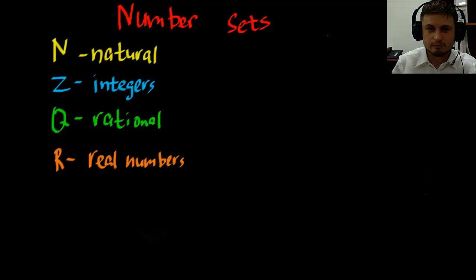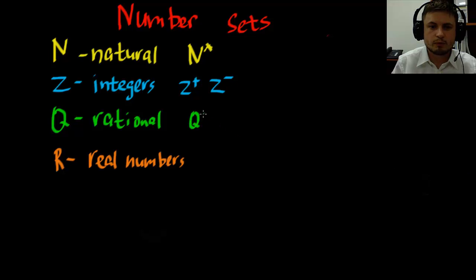Now there are some modifications to each of these. So for example, sometimes you'll see N with a little asterisk right here and this is something we call counting numbers. This is actually also in your book. Sometimes you'll see Z as Z plus or Z minus and that's positive integers and negative integers. And you'll also see Q prime which is the irrational numbers.